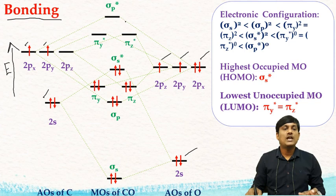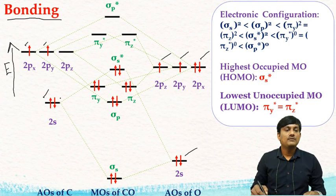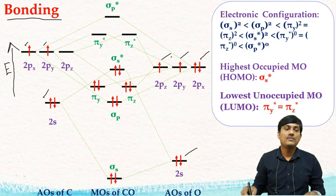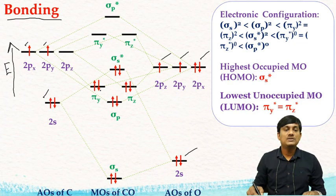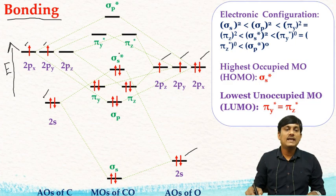From the valence electronic configuration, carbon contributes 4 electrons and oxygen contributes 6 electrons, giving a total of 10 electrons. These 10 valence electrons are filled into the molecular orbitals: σs², σp², πy², πz², σ*s². This is the electronic configuration of the CO molecule.